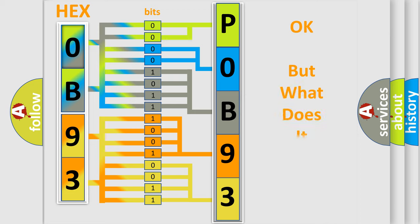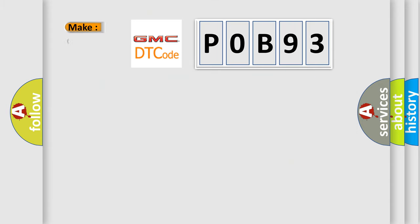The number itself does not make sense to us if we cannot assign information about what it actually expresses. So, what does the diagnostic trouble code P0B93 interpret specifically for GMC car manufacturers?